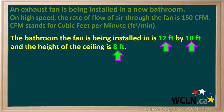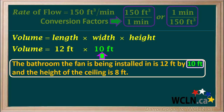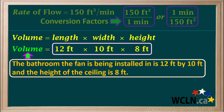We're told that the dimensions of the bathroom are 12 feet by 10 feet and the ceiling is 8 feet high. Given the dimensions of the room, we can determine the total volume of air using the formula: volume equals length times width times height. The length is 12 feet, the width is 10 feet, and the height is 8 feet, so the volume is 12 × 10 × 8 feet, which equals 960 cubic feet.